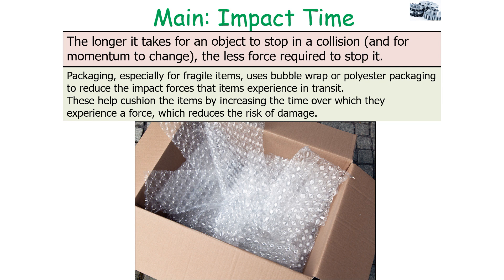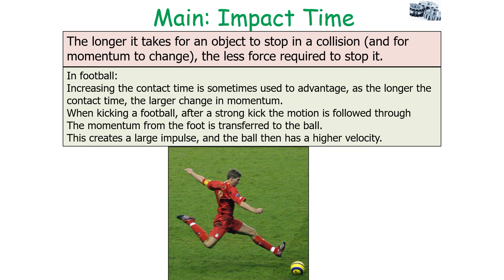Packaging, especially for frail items, uses bubble wrap or polyester packaging to reduce the impact forces that the items experience in transit. This helps cushioning the items by increasing the time over which they experience a force, which reduces the risk of damage.